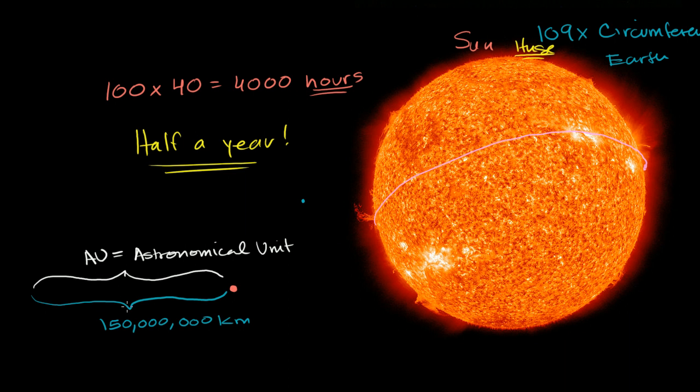And just to give a sense of how far this is, light, which is something that we think is almost infinitely fast, something that looks instantaneous, takes eight minutes to travel from the Sun to the Earth. If the Sun were to disappear, it would take eight minutes for us to know that it disappeared on Earth.